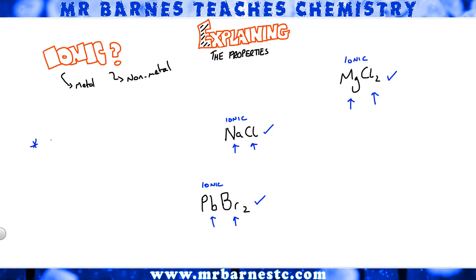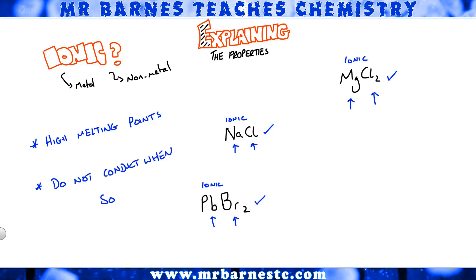Now that you can work out whether something is ionic or not, you need to remember the basic properties. All ionic compounds have a high melting point. They do not conduct electricity when solid, but they do conduct electricity when molten.